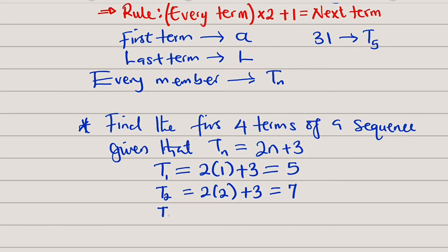For the third one, because we want to find only 4, T3 will be equal to 2 multiplied by 3 plus 3. 2 multiplied by 3 is 6. And 6 plus 3 is equal to 9. Therefore, the third member is 9.